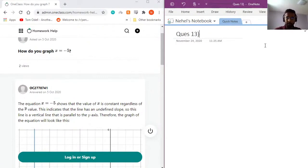Okay, next up, how do we graph x equals negative 5? To graph x equals negative 5, we have to visualize how that would look when the value of y changes.